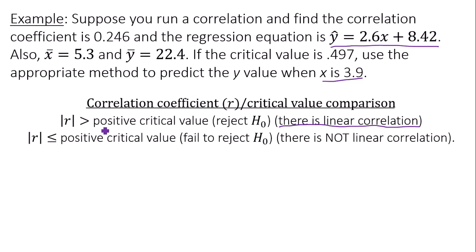So what we have to do is compare the correlation coefficient r to the positive critical value. In this case, the correlation coefficient is 0.246 and the critical value is 0.497. Let's compare 0.246 to 0.497. It is clearly less than—the correlation coefficient is clearly less than the critical value.